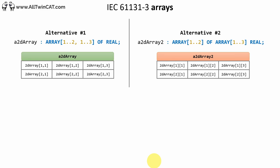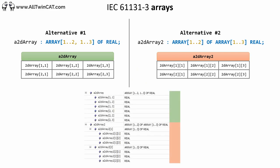Arrays don't have to be one-dimensional — you can create multi-dimensional arrays. In this example we have a two-dimensional array declared in two different ways. In alternative 1 we declare a two-dimensional array with two rows and three columns. Accessing the arrays is done slightly differently depending on how you declare them — look how we access the value in the first row and the first column using alternative 1 compared to alternative 2. The online view in the TwinCAT IDE also looks slightly different depending on how you declared your two-dimensional array.